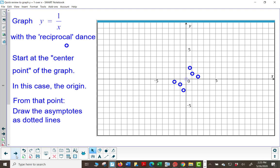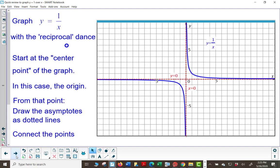We then want to draw in both the asymptotes as dotted lines. The x and y axis are asymptotes or boundary lines. Connecting the points, we get this curve, it is called a hyperbola.